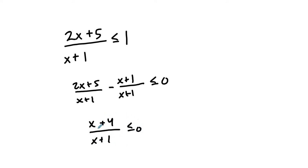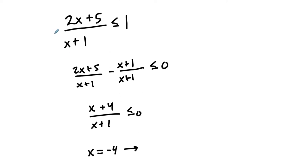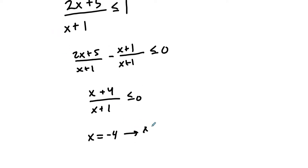So we're trying to figure out when this ratio is less than or equal to 0, and there are two interesting x values to note. If x equals negative 4, then the whole thing is 0. I'll write this as x plus 4 over x plus 1 equals 0.